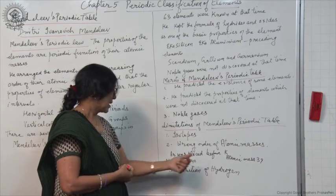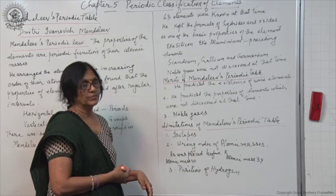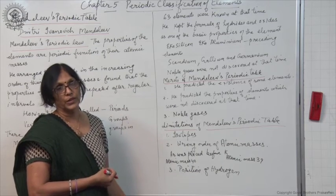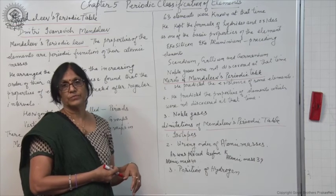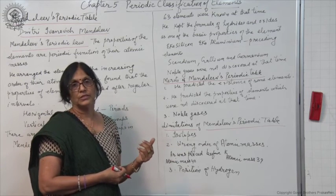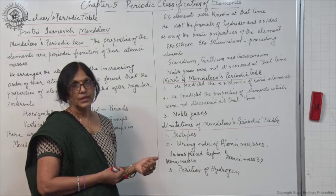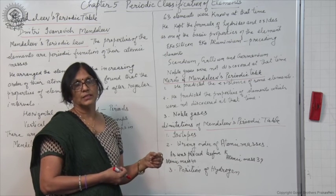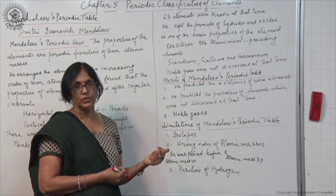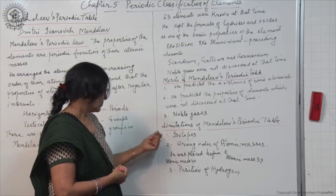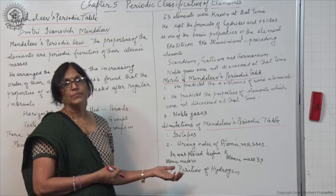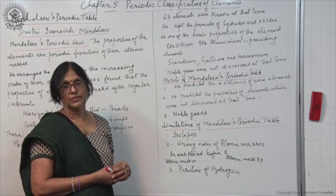For example, argon has atomic mass 40 but was placed before potassium with atomic mass 39. Also, the position of hydrogen was problematic — Mendeleev did not know how to place it, because hydrogen behaves like metals (it reacts with halogens, oxygen, and sulfur in the same manner as metals) and also like non-metals (it exists as a diatomic molecule H₂, similar to Cl₂, Br₂, I₂). So he did not know where to place hydrogen. These are certain limitations of Mendeleev's periodic table, but Mendeleev made a remarkable attempt in classifying the elements and it is known till now.